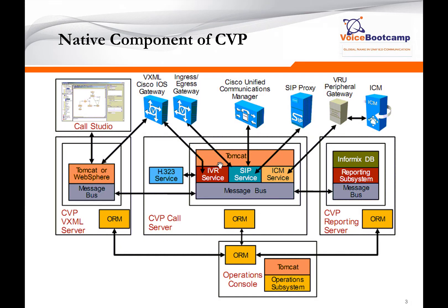Each component communicates with other components using various methods. For example, the CVP call server will communicate using the ORM module. The operation console, which is basically the application server that provides the management tool to administer and deploy your CVP solutions — that's where Tomcat and the operation subsystem reside — will communicate with the call server using the ORM modules.